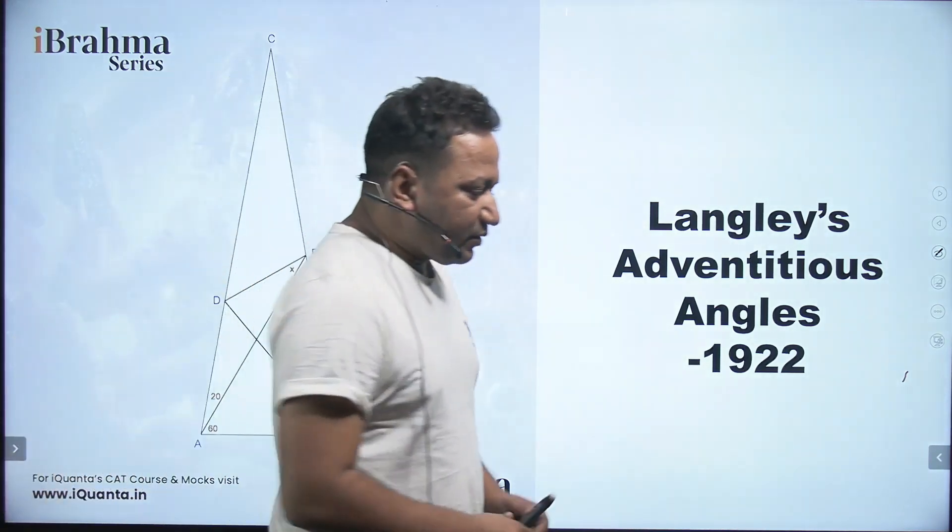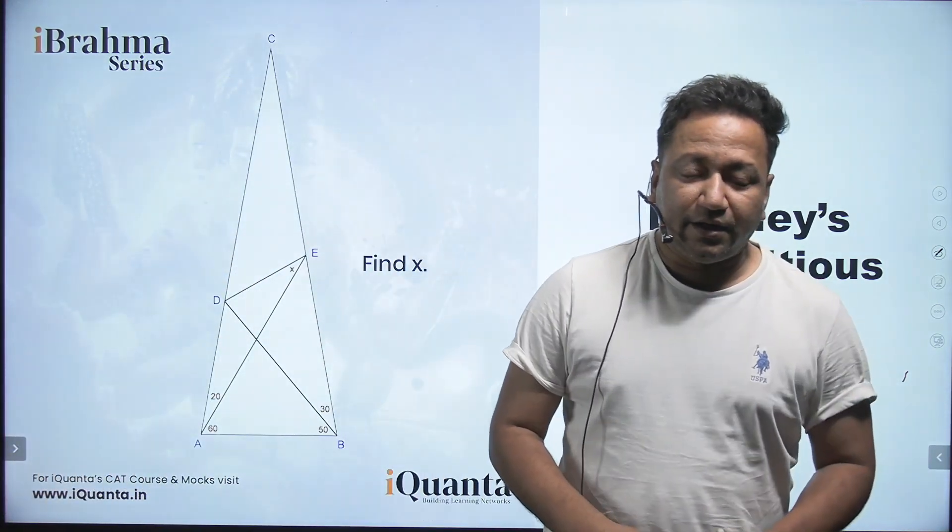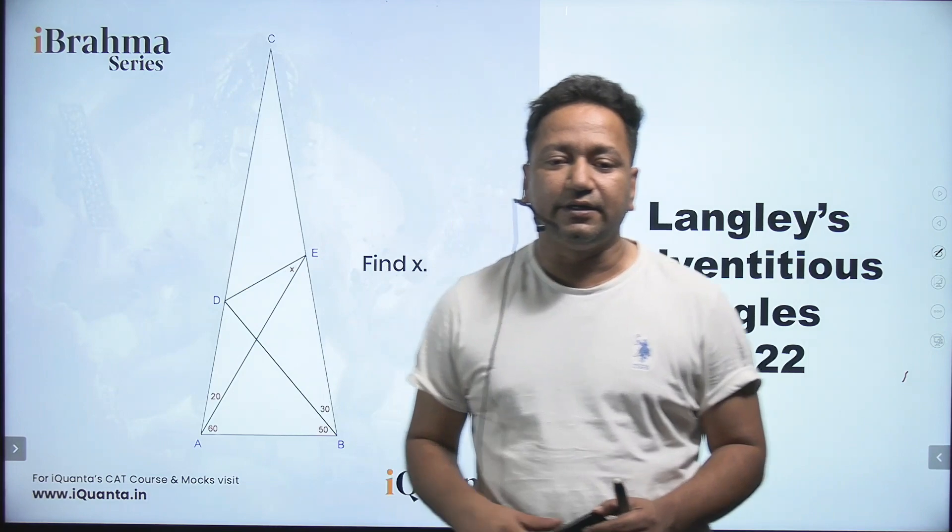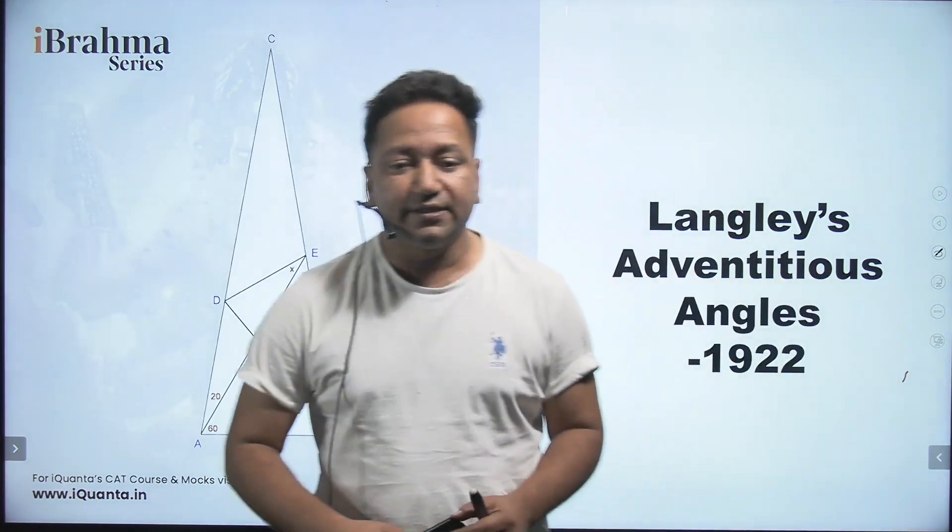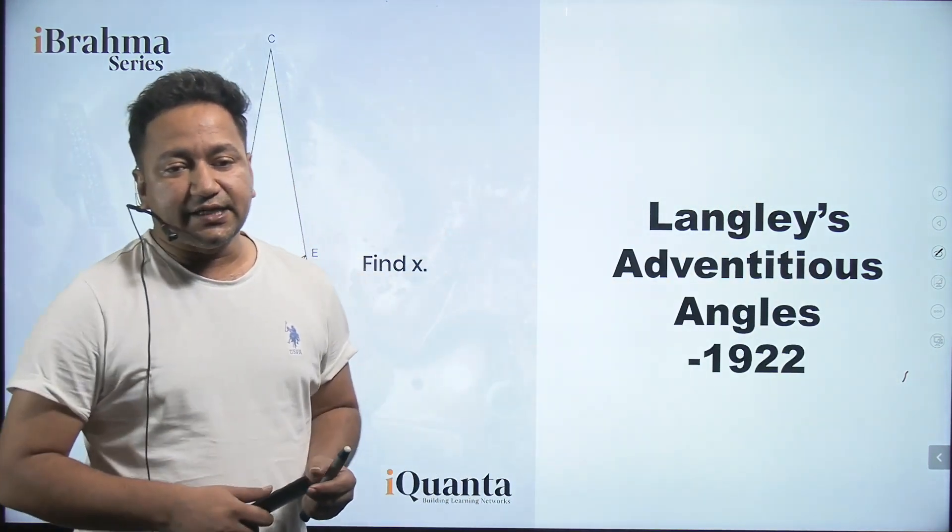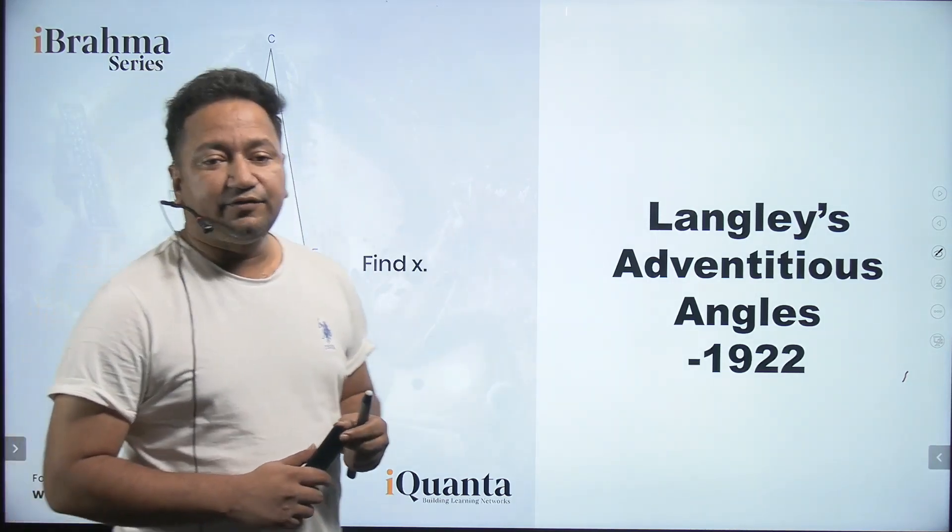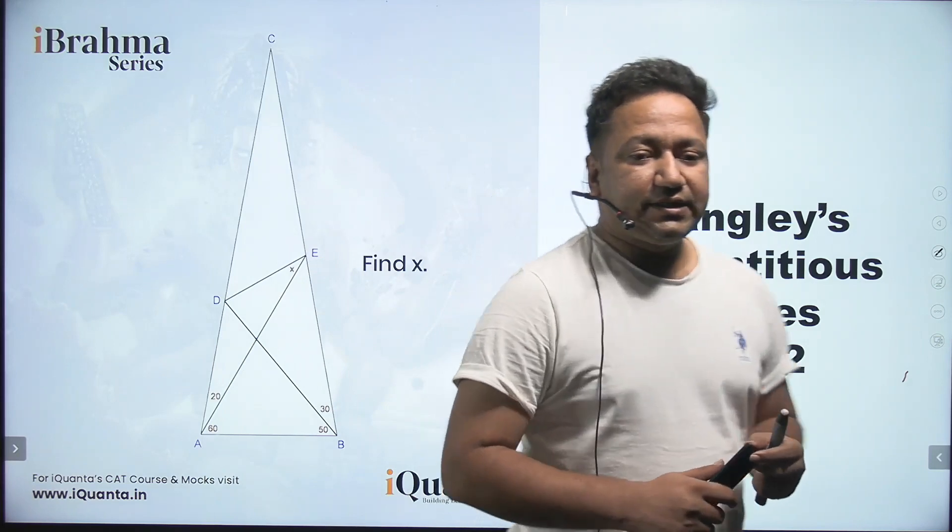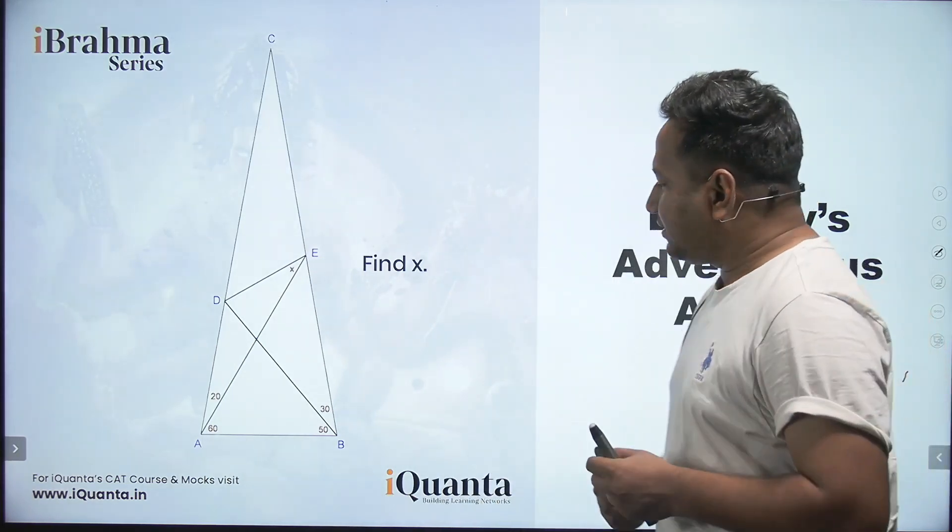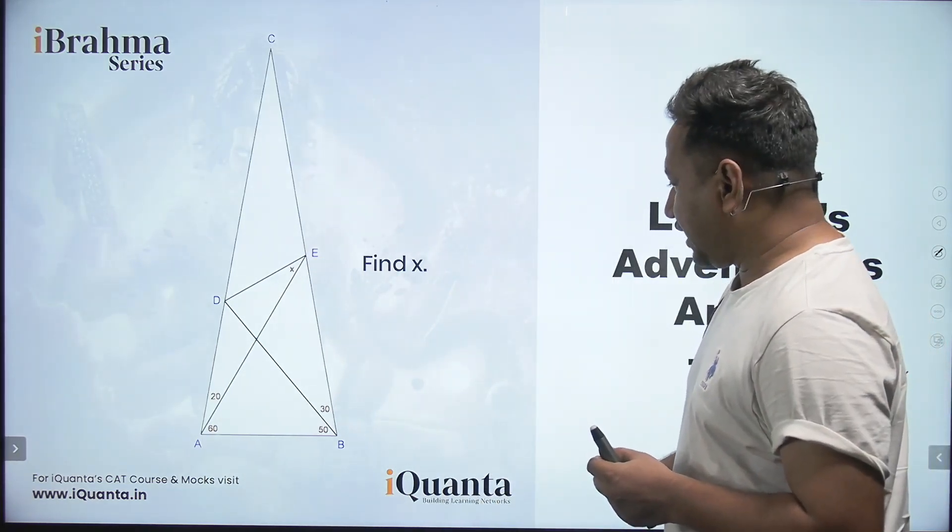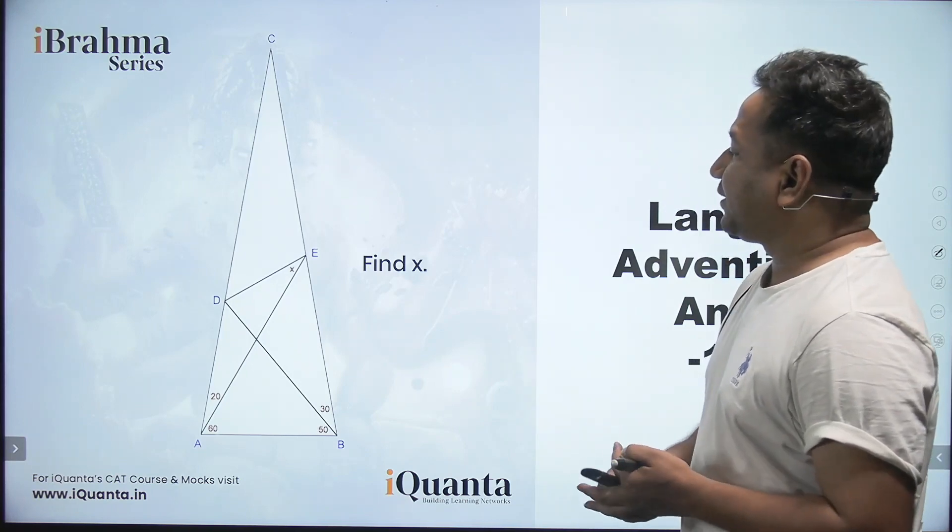The question before you, which was posted a few days back, has got a historical importance. This question is known as Langley's Adventitious Angles, and it was first posted in the year 1922. So as you can see, there is a triangle ABC and some angles are given, and you have to find the value of X.